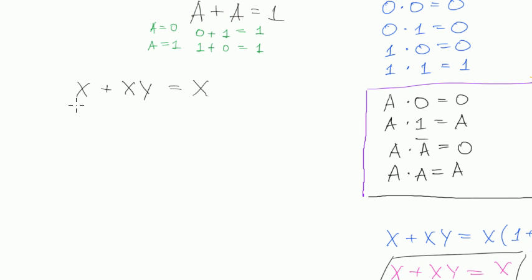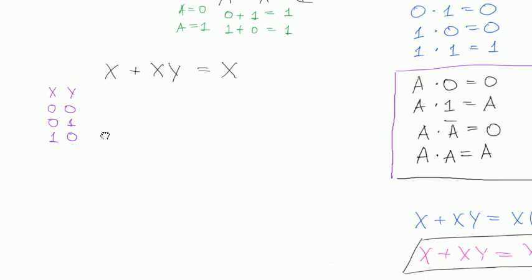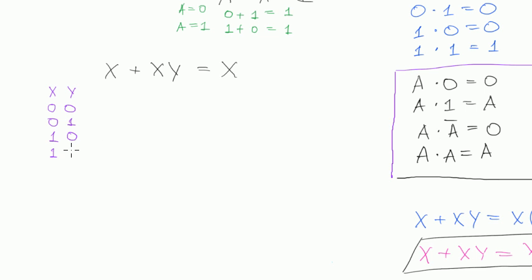Now we will put all the possible values instead of x and y. Let's make a small table. We have x and we have y. The combinations of all values would be: 0, 0 — then we take x equals 0 and y equals 1. If x equals 0 and y equals 0, then x plus xy will be 0 plus 0 times 0, which is 0. If x equals 0 and y equals 1, then it will be 0 plus 0 multiplied by 1, which is also 0.